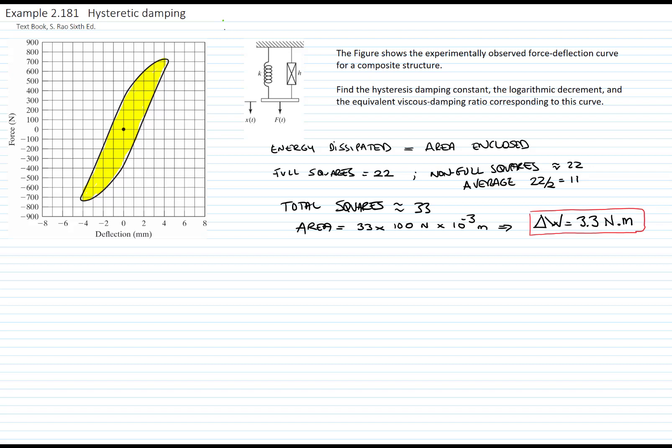The dissipated energy can also be calculated using the properties of the system, which is pi times k times beta times maximum displacement squared. The maximum displacement, or maximum deflection of the system, you can also read from the graph.